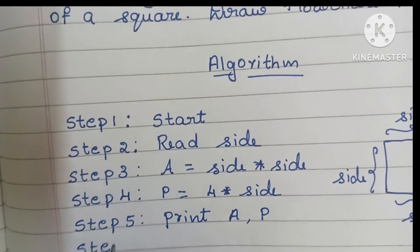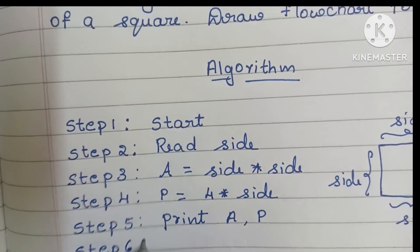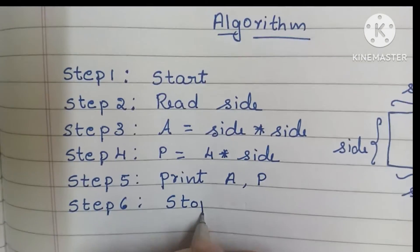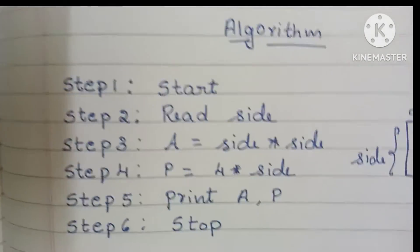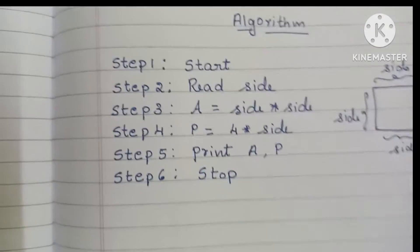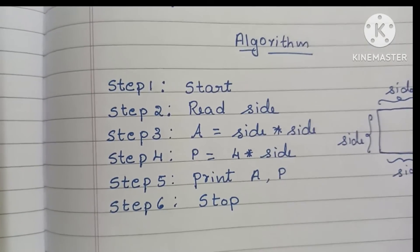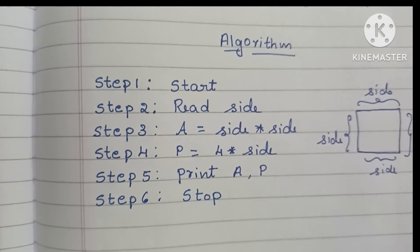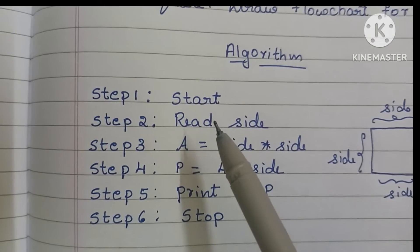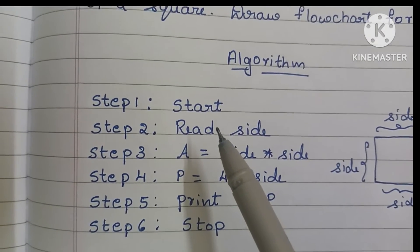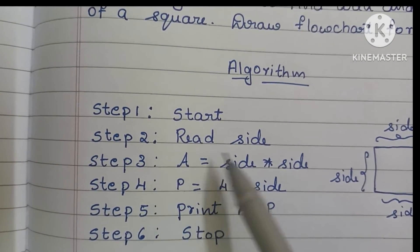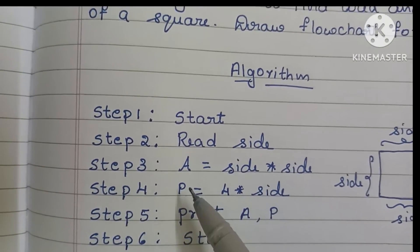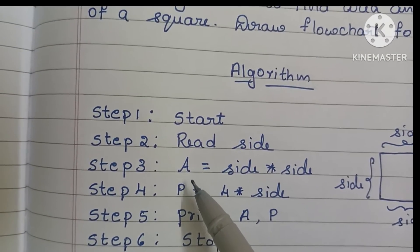In step six we have to stop the algorithm using the stop statement. So this is the algorithm to find the area and perimeter of a square. Step one is always start with the start statement. In step two we have to read the side value.